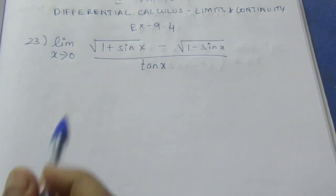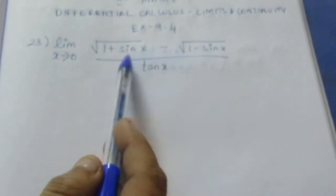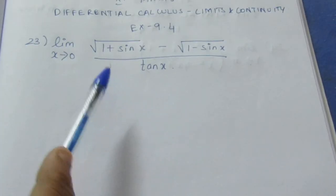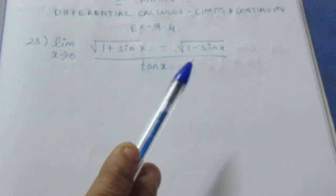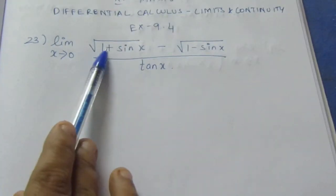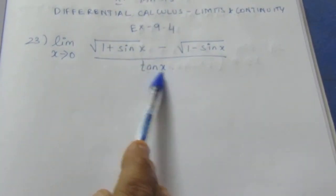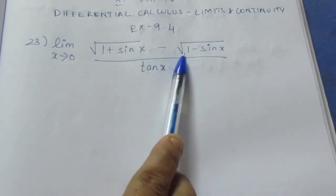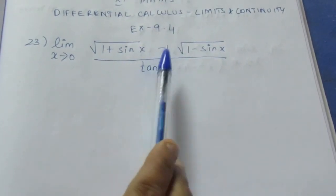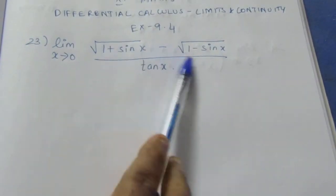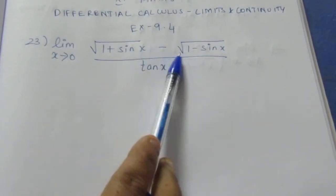There is no formula for sin x here. Therefore, let's try the conjugate of the root. When we substitute here, we get zero over zero — an indeterminate form.